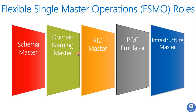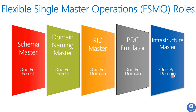Out of these five FSMO roles, the first two are forest-wide and the other three are domain-wide. Schema Master and Domain Naming Master are forest-wide roles. RID Master, PDC Emulator, and Infrastructure Master are domain-wide roles. You have only one Schema Master and one Domain Naming Master forest-wide, but you can have multiple RID Master, PDC Emulator, and Infrastructure Master domain-wide.